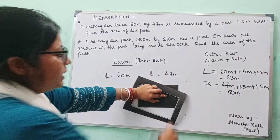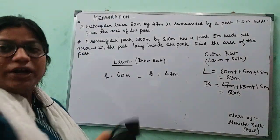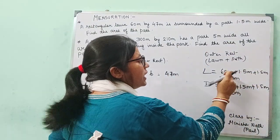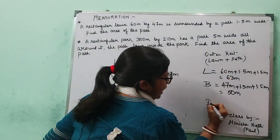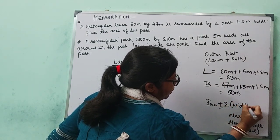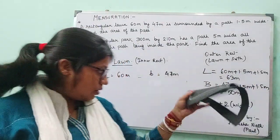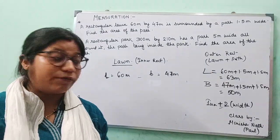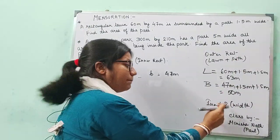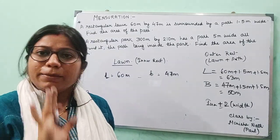I hope I am clear in explaining how we got the outer dimensions. In general, if you are given the inner dimensions and asked to find the outer dimensions, you add 2 times the width to the inner dimension — whether it is length or breadth. Inner dimensions plus 2 times the width of the path gives you the outer dimensions. That is the normal formula.